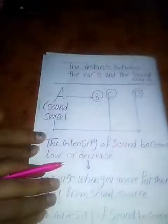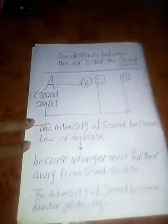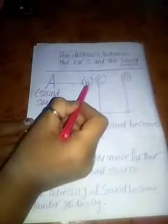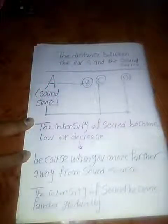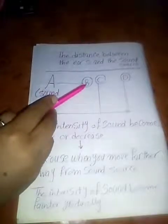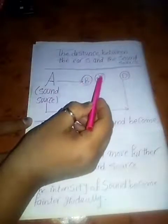For number one — the distance between the ear and sound source — imagine that A is the sound source. I have a person standing at point B, a person at C, and a person at D. Which one of them will hear the sound most clearly and strongly? Number B — yes, the person standing at point B.